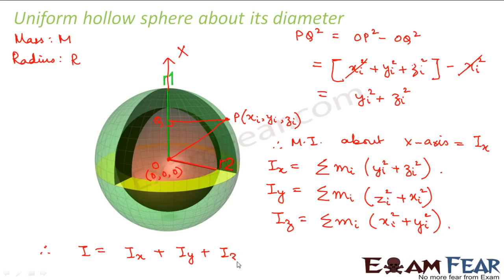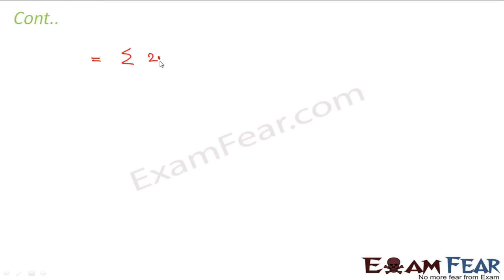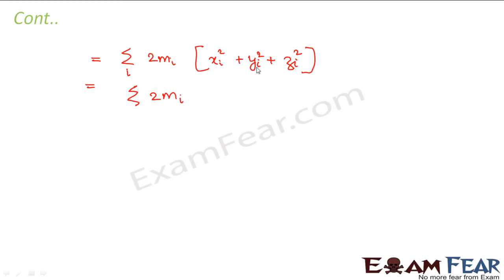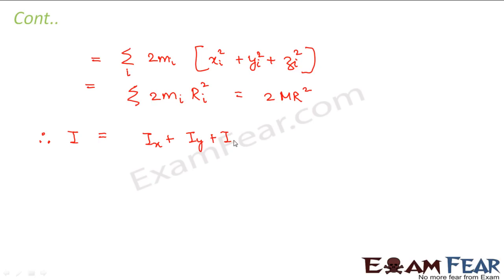The total moment of inertia of the hollow sphere equals Ix + Iy + Iz. This can be written as summation of 2mi(xi² + yi² + zi²). Therefore the moment of inertia of the sphere equals (Ix + Iy + Iz) divided by 3, which gives 2MR² divided by 3.